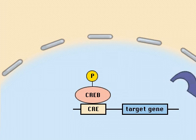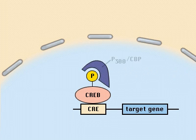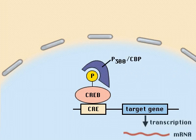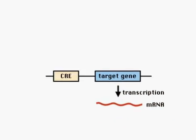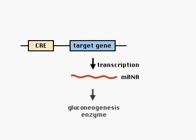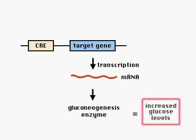With the coactivator P300CBP, it stimulates transcription of CRE-regulated genes. In liver cells, CRE-containing genes encode enzymes involved in glucose production. The end result is increased levels of glucose, necessary to energize tissues during the stress response.